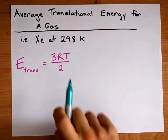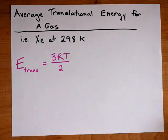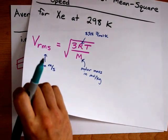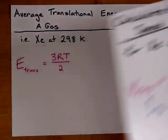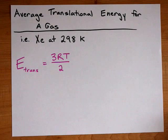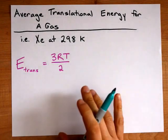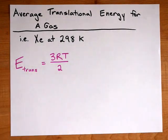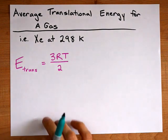Now you might recognize this as being related to the root mean square speed of the gas. There's the 3RT, but the 2 and the molar mass and the square root end up canceling out because of the way you calculate kinetic energy, 1.5 mv squared.